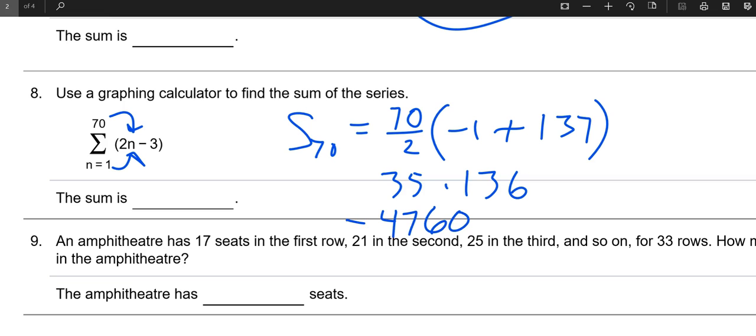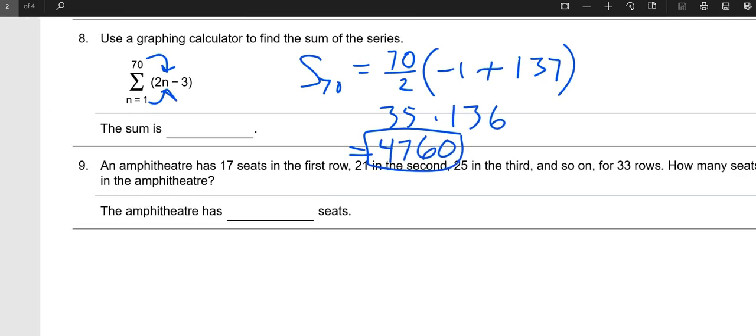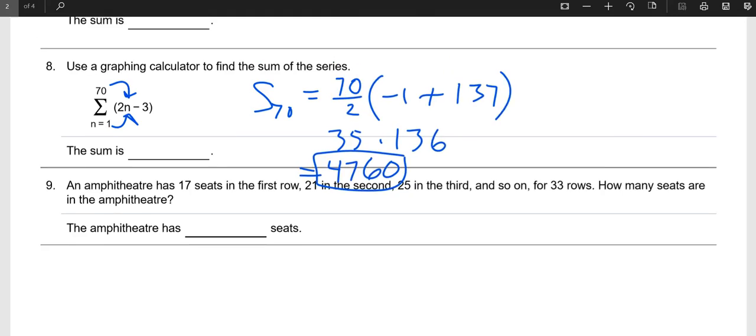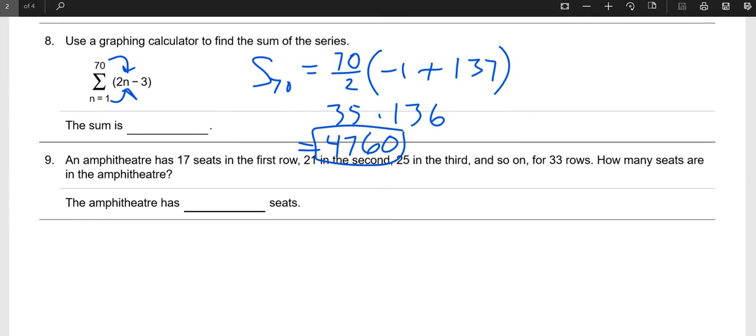Looks like we got seventy terms, and we plugged in a one, we got negative one. So plugged in, we got seventy terms, plugged in a one, we got negative one. Plugged in a seventy, and we got one thirty-seven. So this is really thirty-five times one thirty-six, which I believe is like forty-seven sixty or something like that.